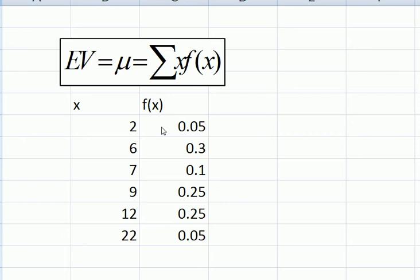Notice that f of x, these probabilities, must, of course, add up to 1, and they must also satisfy the condition that none of them are negative. They could be 0, but they can't be negative.